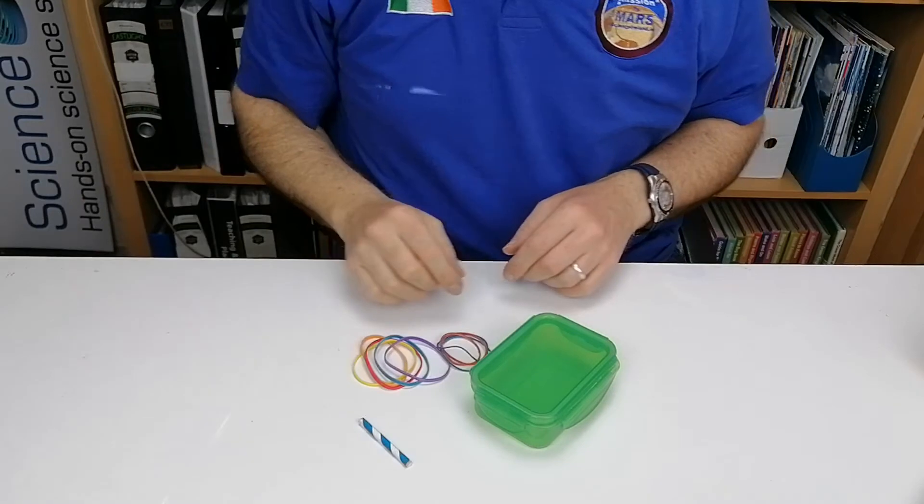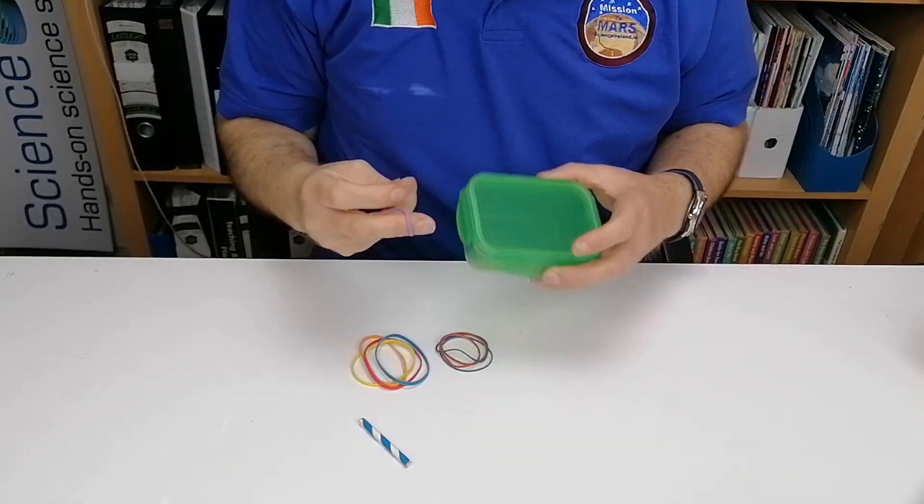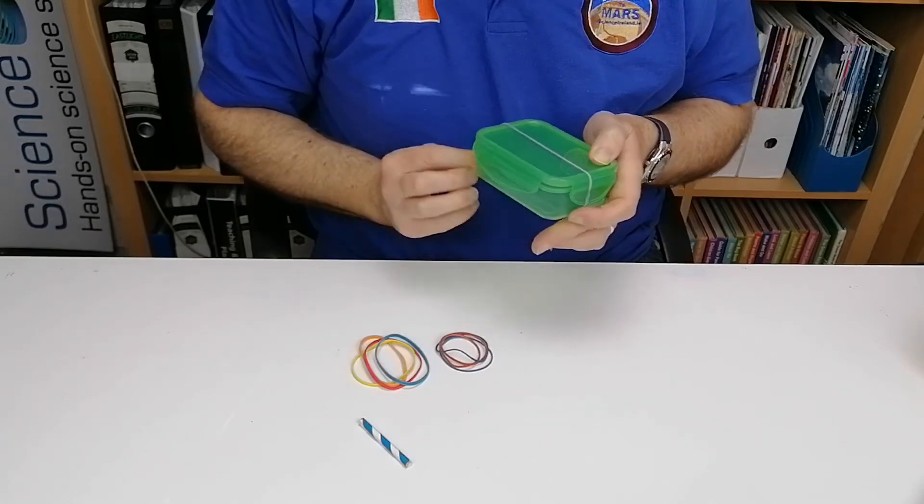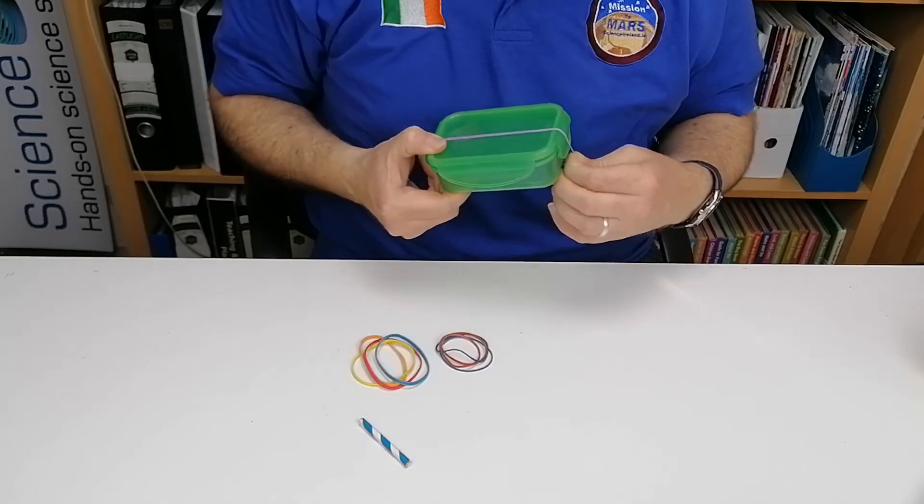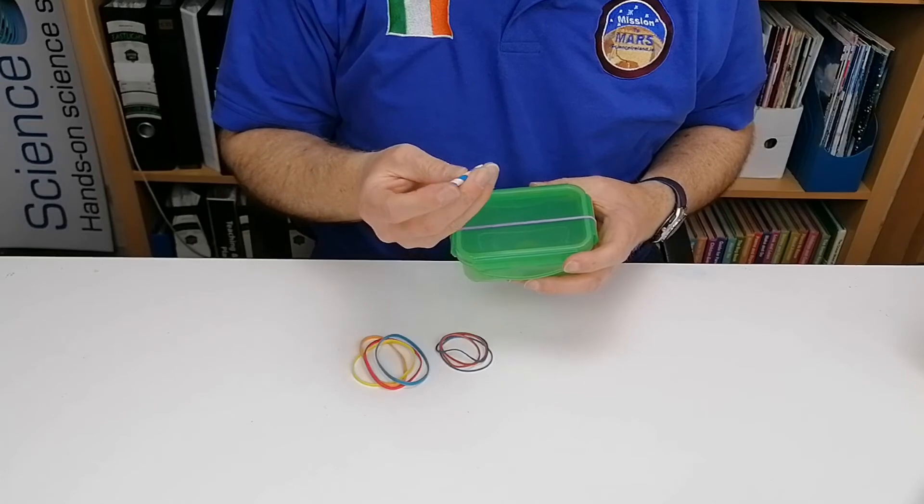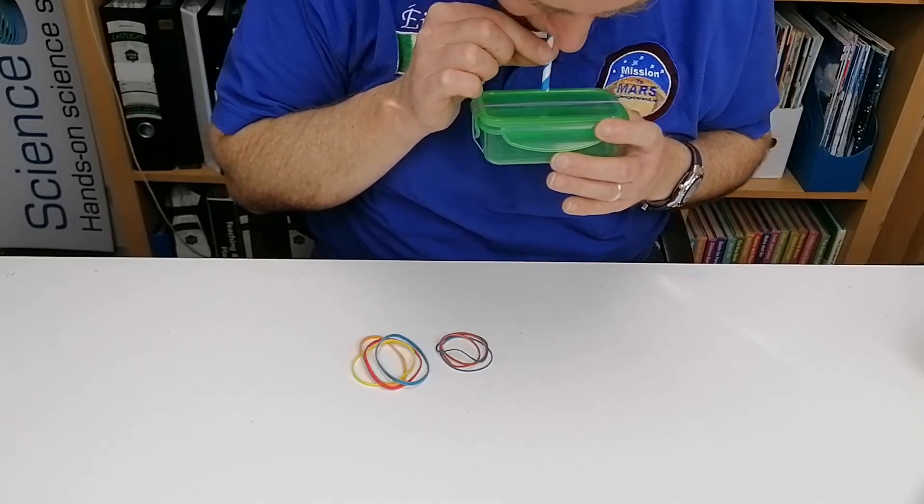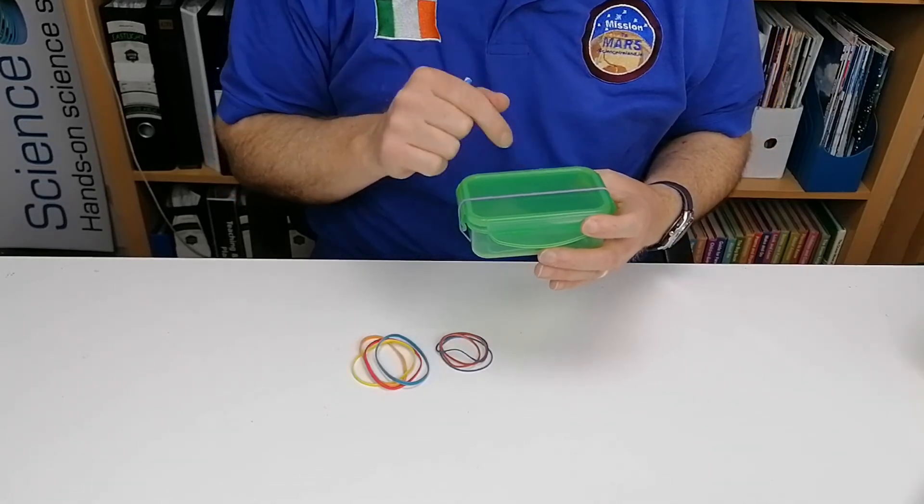So to do this activity what you're going to do is you're going to take your elastic bands and you're going to put them around either your box or glass. You can just start with one elastic band and then once you get one elastic band going you can put more in. So you get your straw and then you blow through it and you can hear the vibration in the elastic band.